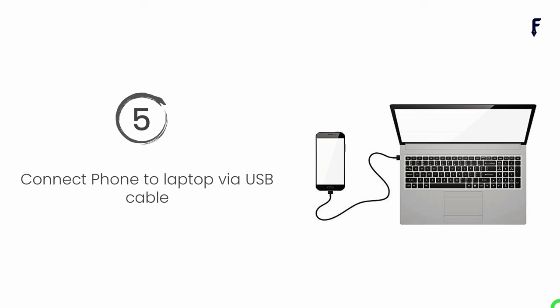Step number five: connect your phone to the laptop using the USB cable that you regularly use to charge your phone. This is not a permanent step — we are going to connect over Wi-Fi. We just need the cable temporarily to enable ADB, so attach the cable from your phone to your laptop.